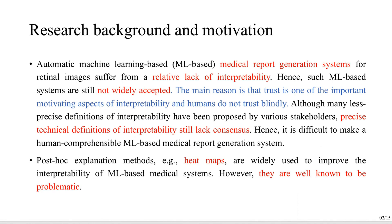Machine learning-based medical report systems for medical images suffer from a relative lack of interpretability. Such ML-based systems are still not widely accepted. The main reason for this is that trust is one of the important motivating aspects of interpretability, and humans do not trust blindly. Although some less precise definitions of interpretability have been proposed by various stakeholders, precise technical definitions of interpretability still lack consensus. So in this case, it is very difficult to make a human-comprehensible ML-based medical report system.